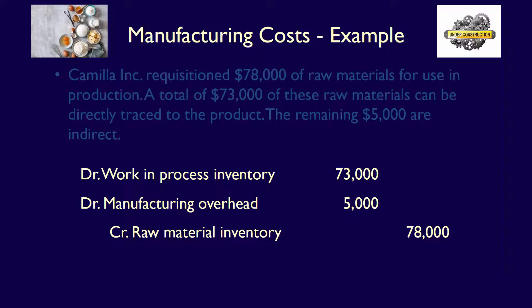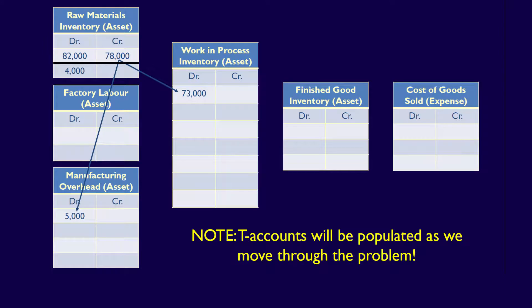The indirect materials would be debited to the manufacturing overhead account — also called factory overhead, manufacturing overhead control, work overhead, or factory burden — where we accumulate the total cost of operating the factory which cannot be traced directly to the product. To finish this entry, we credit raw materials inventory for the total transferred into production, $78,000. In the T-accounts, we enter a credit to raw materials inventory of $78,000, a debit of $5,000 to manufacturing overhead, and a debit of $73,000 to work in process inventory, resulting in an ending balance of $4,000 in raw material inventory.